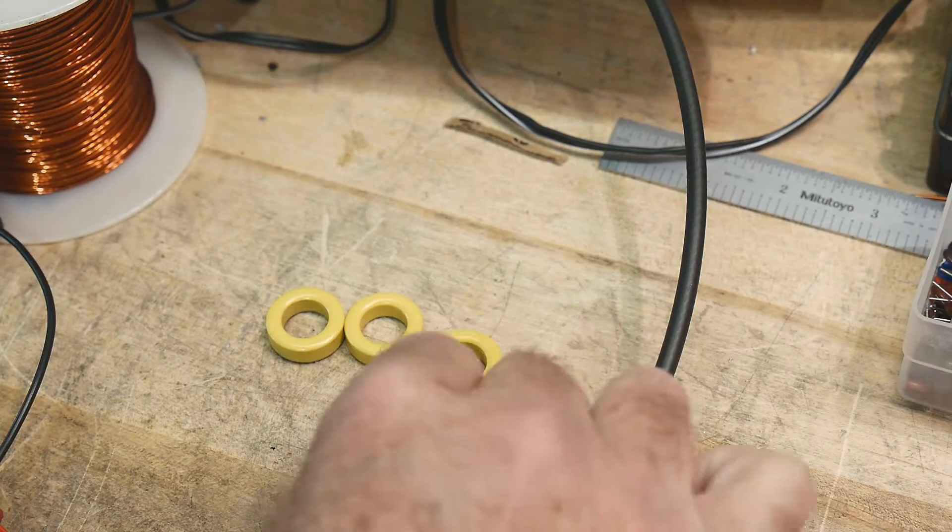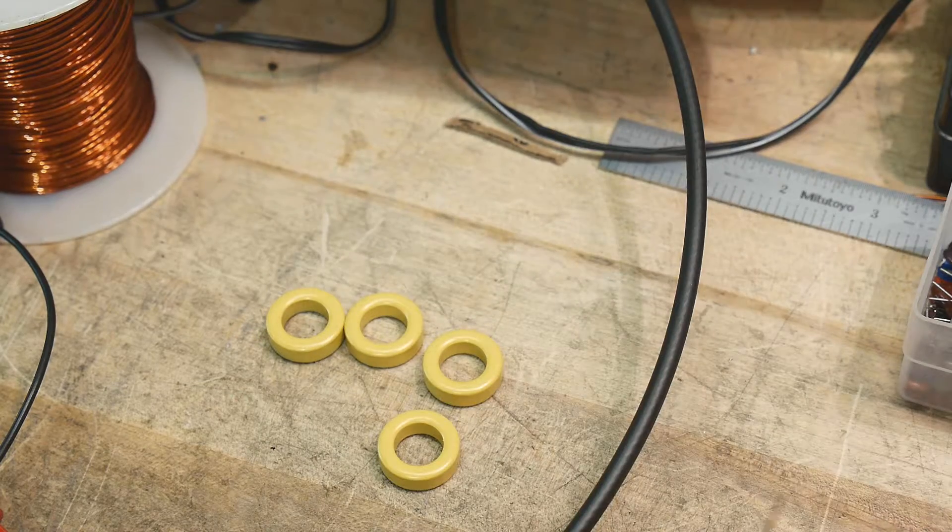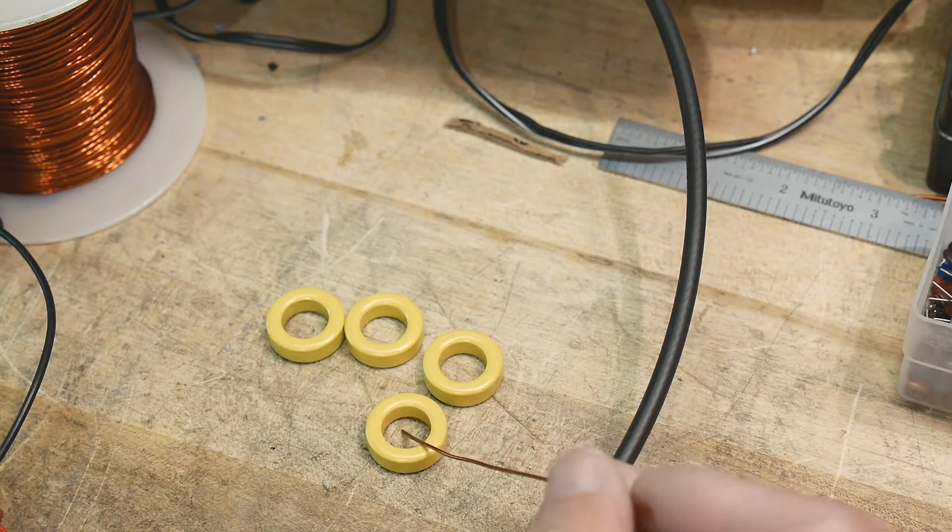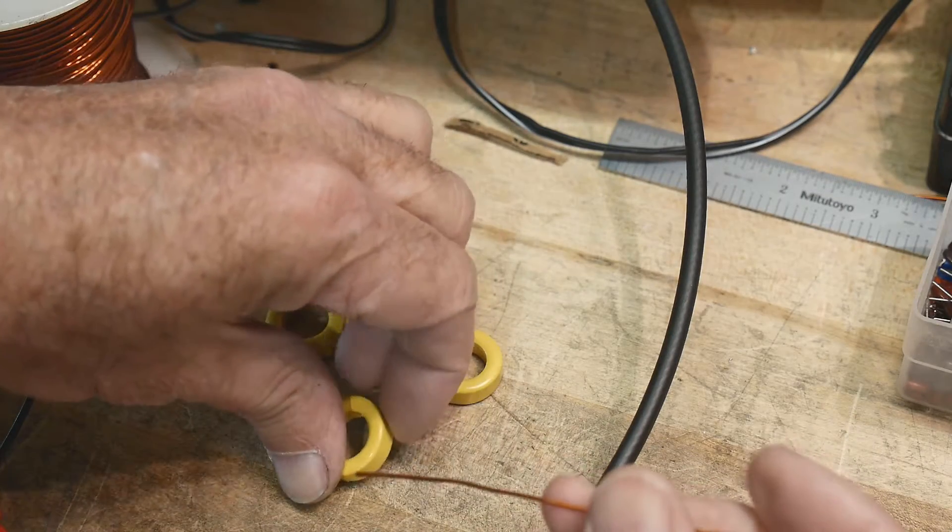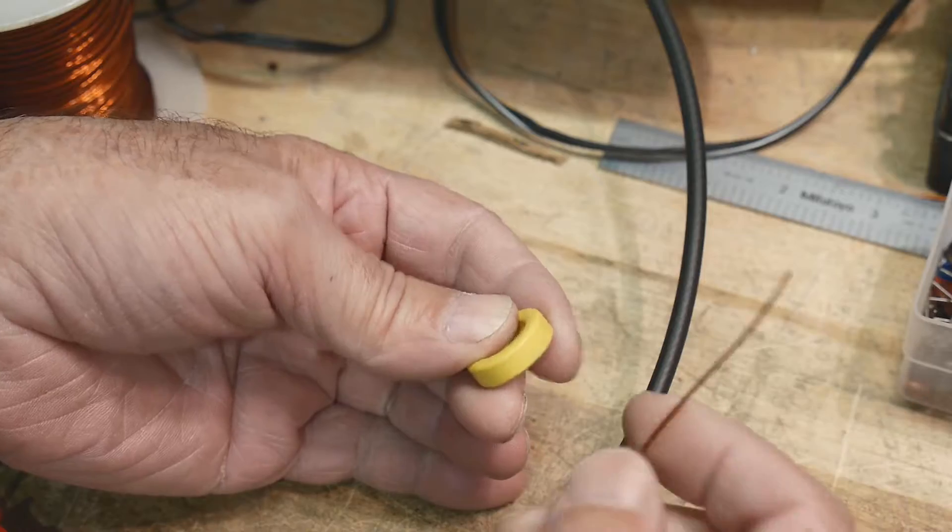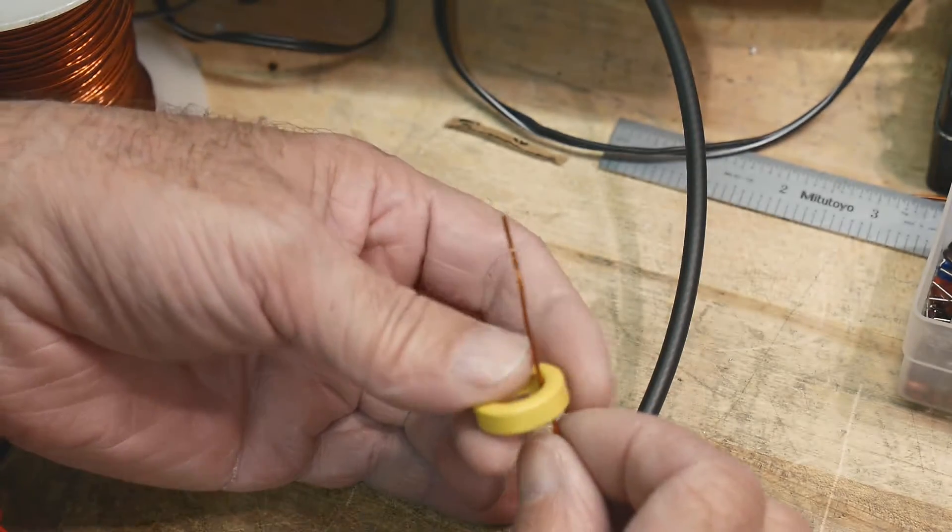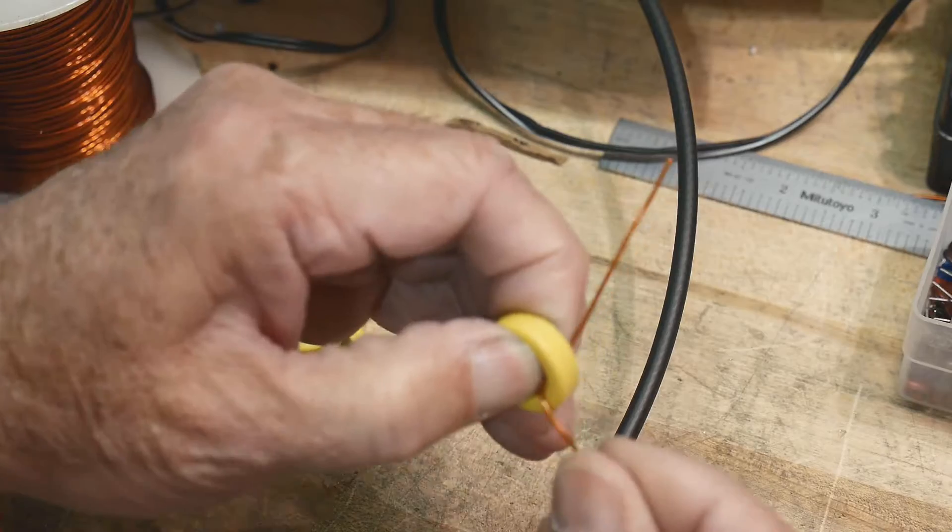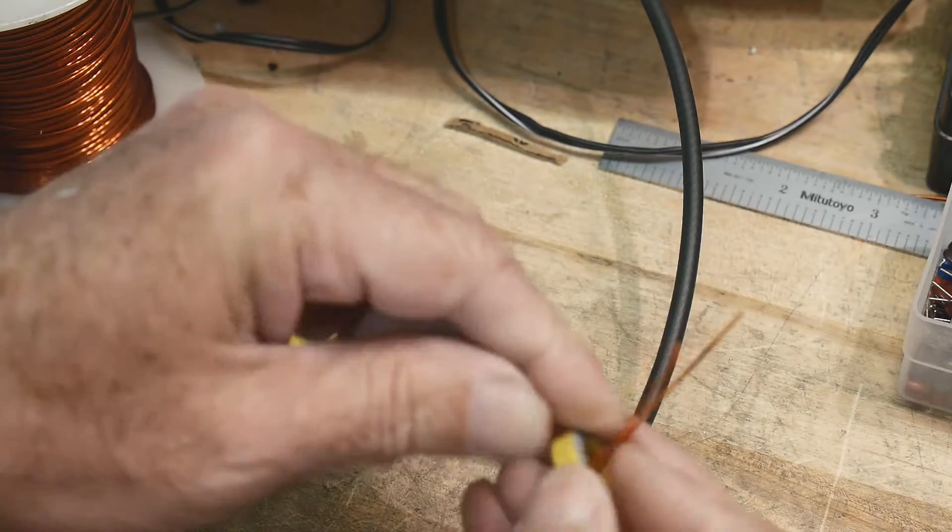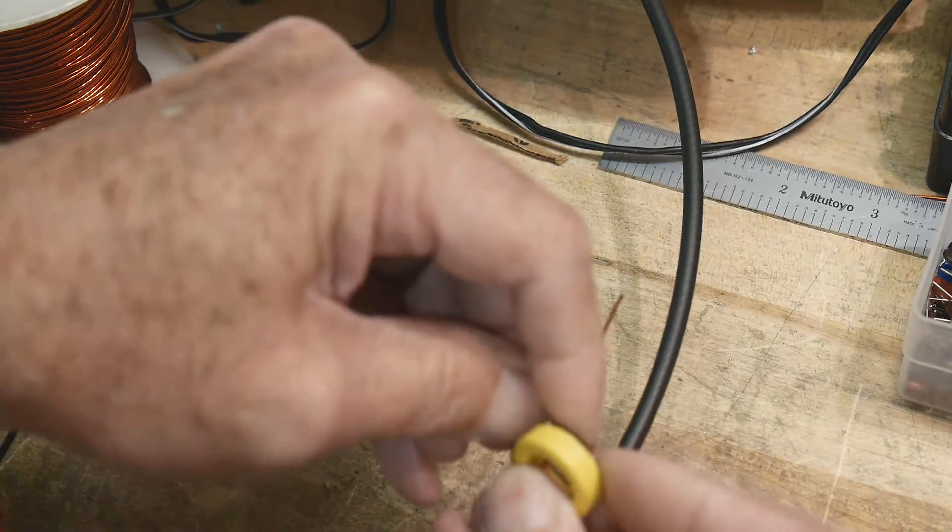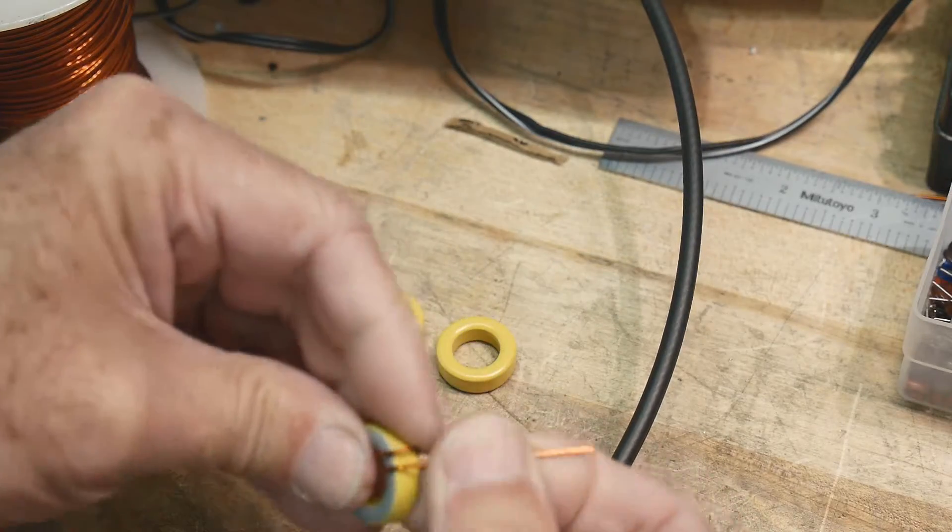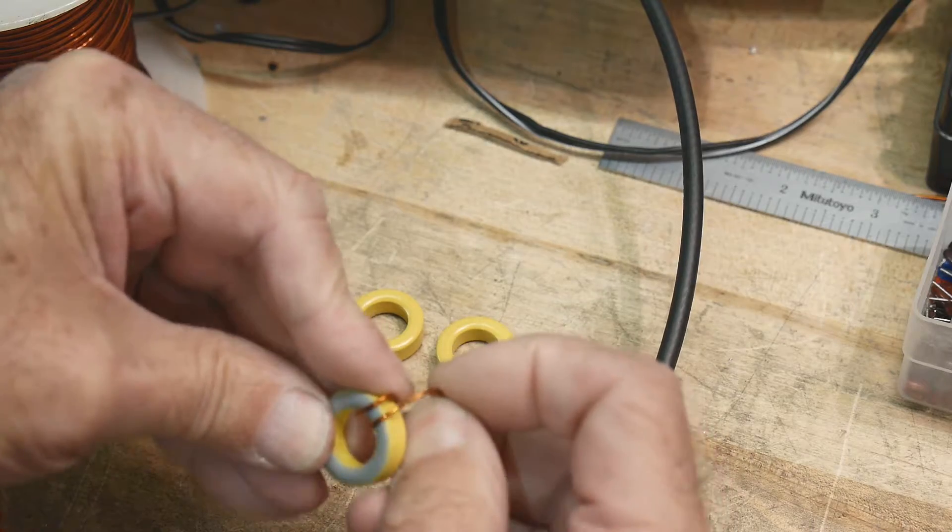Now the way that these are generally used is with enameled wire, but you can use insulated wire just fine. I've built a lot of things with insulated wire and they work just fine. One of the reasons that you use this type of wire is that you can get it closer to the core. There's not a lot of space between the core and the wire and that alleviates some losses. The tighter that you can get the loops around the core the better.